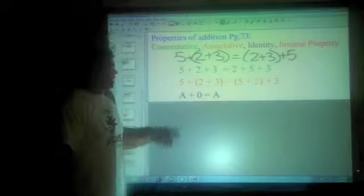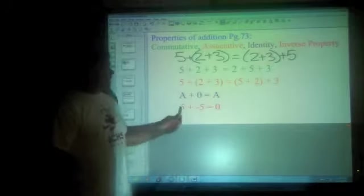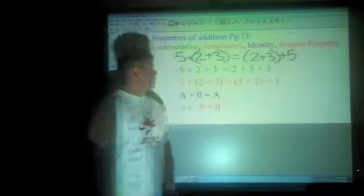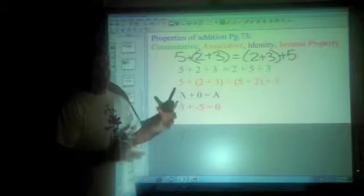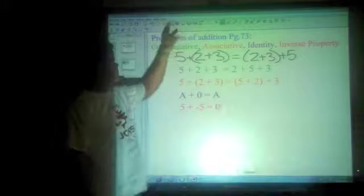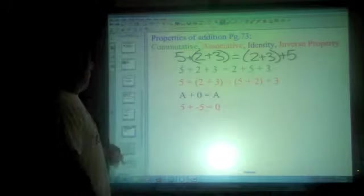You add 0, it doesn't change it. And then anytime you take a number and you add it to its opposite, that's the inverse, you're always going to get 0. So negative 100 and positive 100 add together, make 0. Those are the four rules we have for addition.